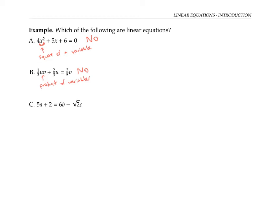The third equation does qualify as a linear equation. Because if I rewrite it as 5a - 6b + √2c = -2, then it is a sum of coefficients times variables, all added up to equal a number.